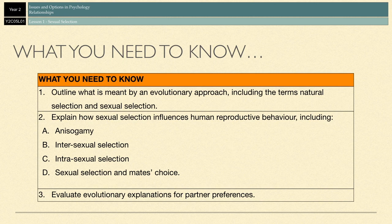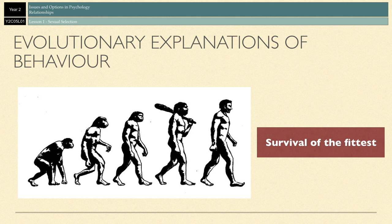So just to kick things off, what do we mean by evolutionary explanations of behaviour? These explanations explain human behaviour in terms of adaptiveness and reproductive success.